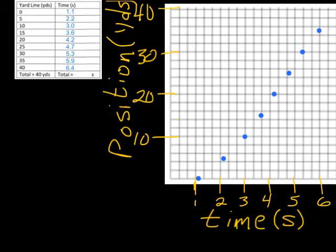And, the last one that we're going to do is going to be the time at 6.4. 6.4 is almost right over here at the end, all the way up to 40. And, here's the 40 yard line. And, so, this is where we will put our last and final dots.